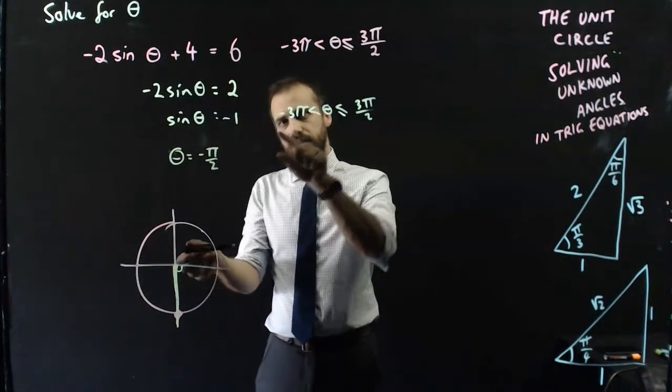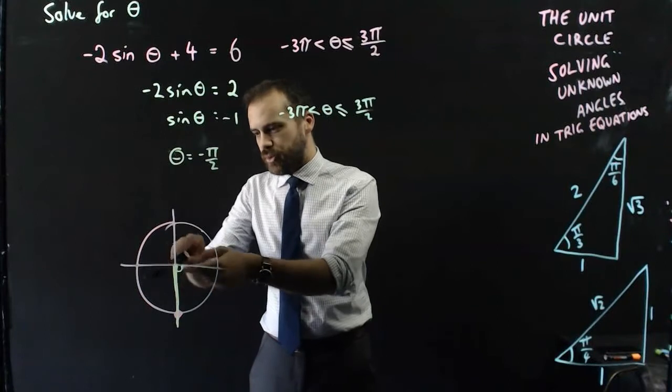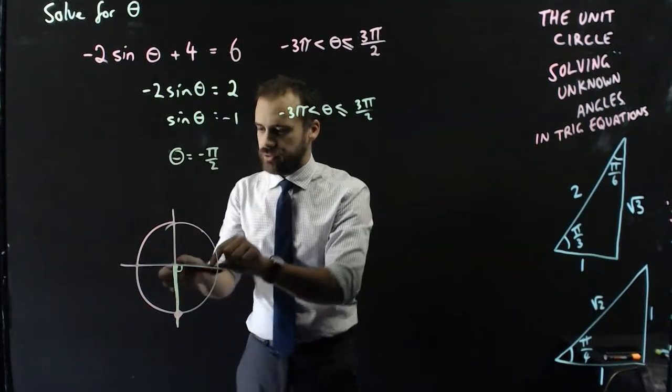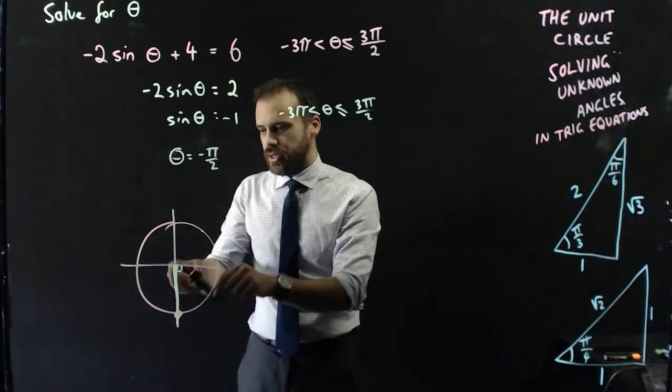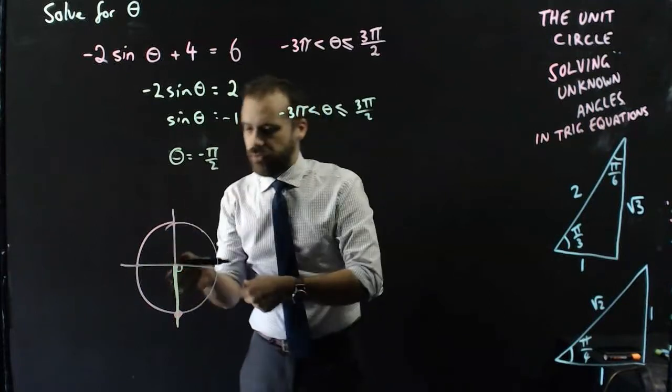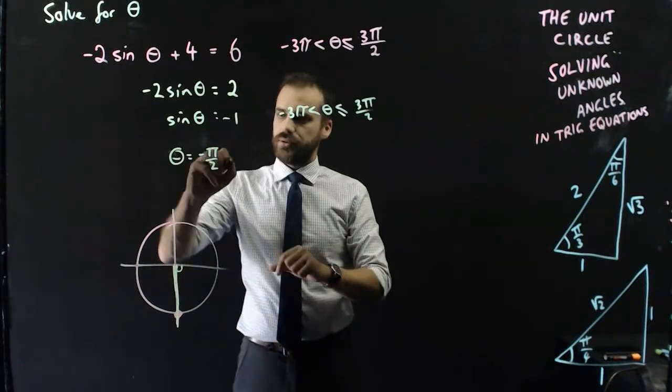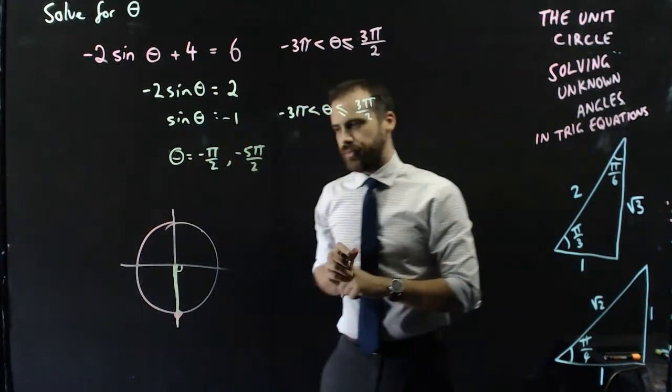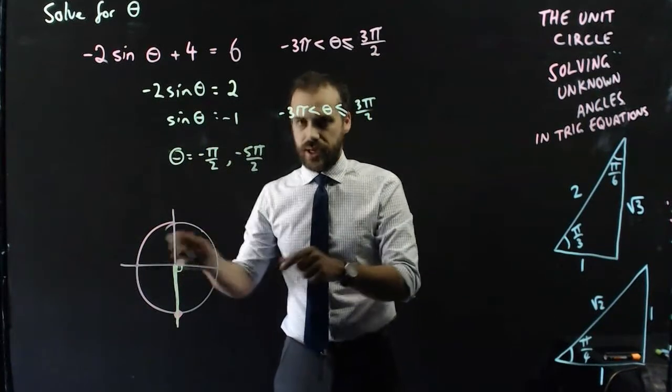And then I keep moving around because it's negative 3π, so I need to move the whole way around the circle. That's negative 2π, and then another half a circle. So then I hit it for a second time. That's, what is it? π on 2, 2π on 2, 3π on 2, 4π on 2, 5π on 2, negative 5π on 2. And I've done that answer twice now.